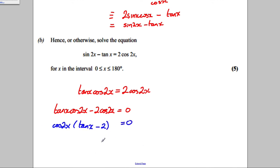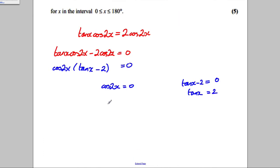So, two things could be 0. Either you've got cos 2x is 0 or you've got tan x subtract 2 is 0, i.e. tan x equals 2. So, you get two set solutions from this.